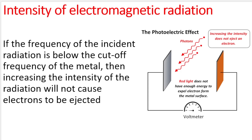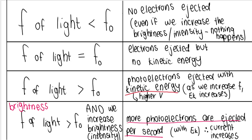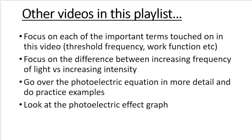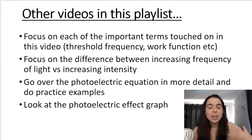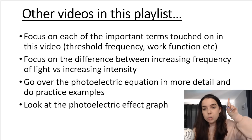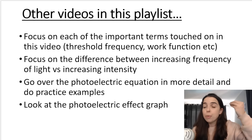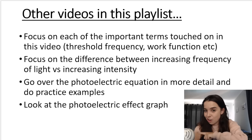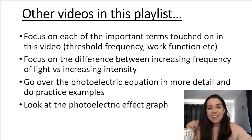If the frequency of the light shining on the metal is below the threshold or cutoff frequency, increasing the intensity does nothing. This is essentially a summary of what happens in the photoelectric effect. Remember to watch the other videos in this playlist — this was a brief overview and introduction, but the other videos look at everything in more detail, do examples, past paper questions, and cover the graphs. See you in another video very soon.